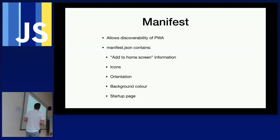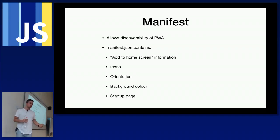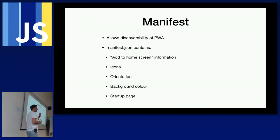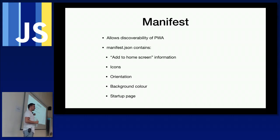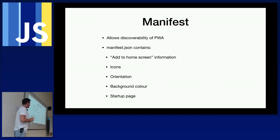The manifest file is a simple JSON file. At a bare minimum it should contain: add-to-home-screen information — the name of the icon on your mobile device after installation; where the icons are; what orientation the app should start in; background color; and start URL — what page should launch when you tap that icon. Browsers can pick this up and use it to install the PWA.